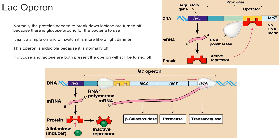One really important thing to remember is that the lac operon will only be turned on if you don't have glucose and you have a lot of lactose. So if you have glucose and lactose both present, the operon will still be off because the bacteria is going to use up all the glucose first before resorting to using lactose. The bacteria simply likes glucose a lot better than lactose.